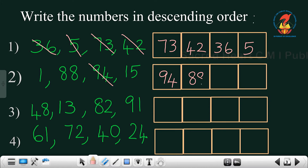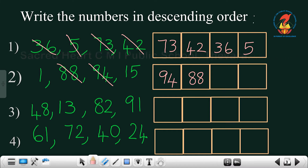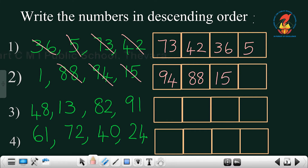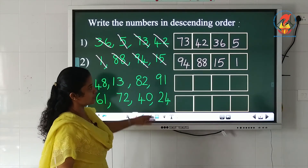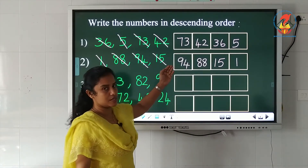The two numbers remaining are 1 and 15. Which is the biggest? 15 is the biggest. Strike that number, and the last number is 1, which is the smallest. Write the number 1 and strike it off. We have arranged the numbers from biggest to the smallest.